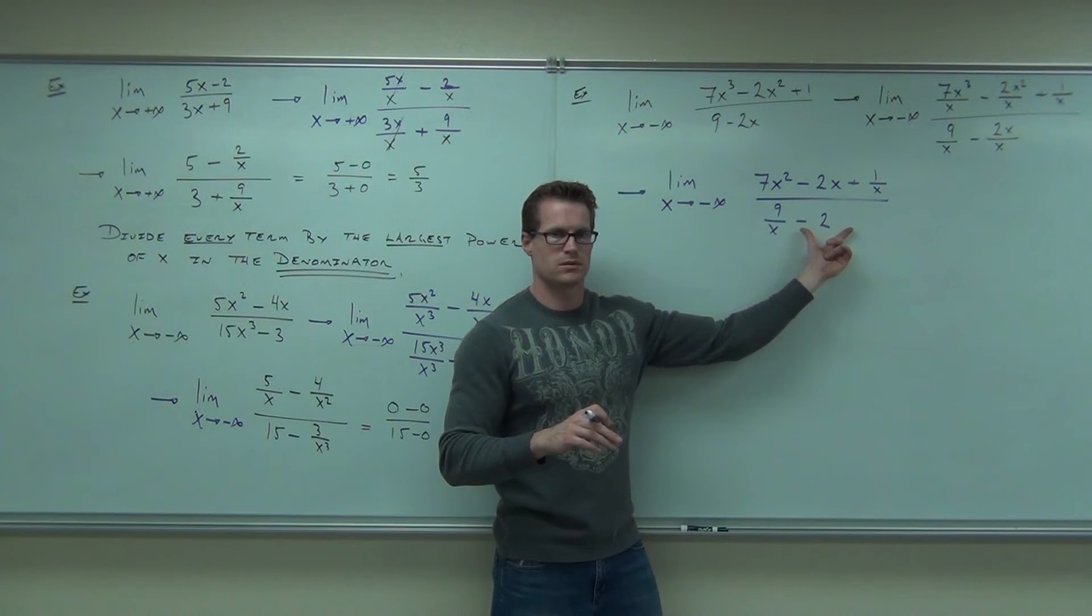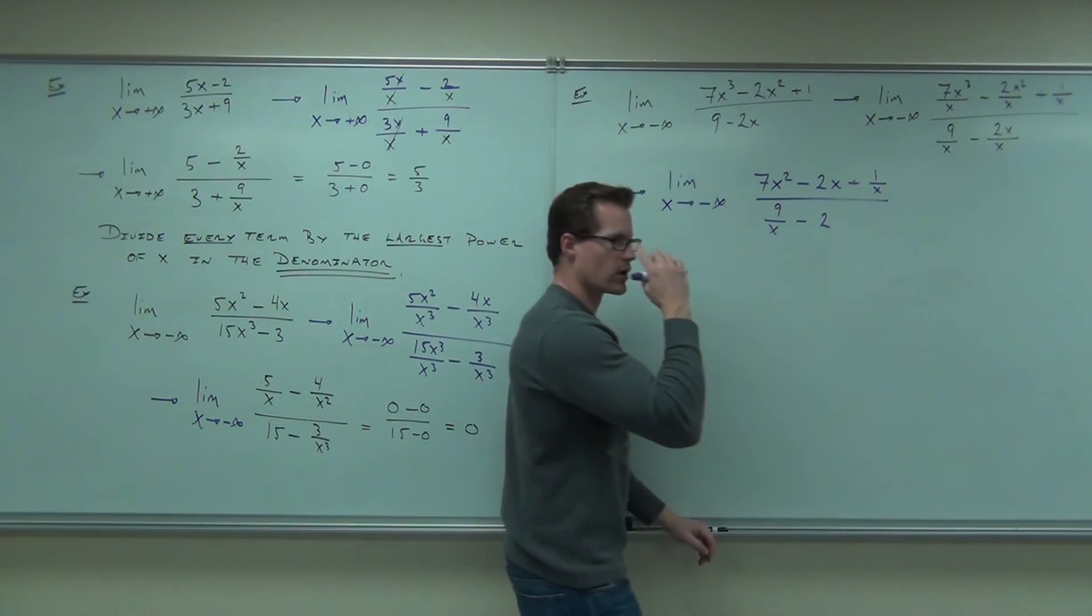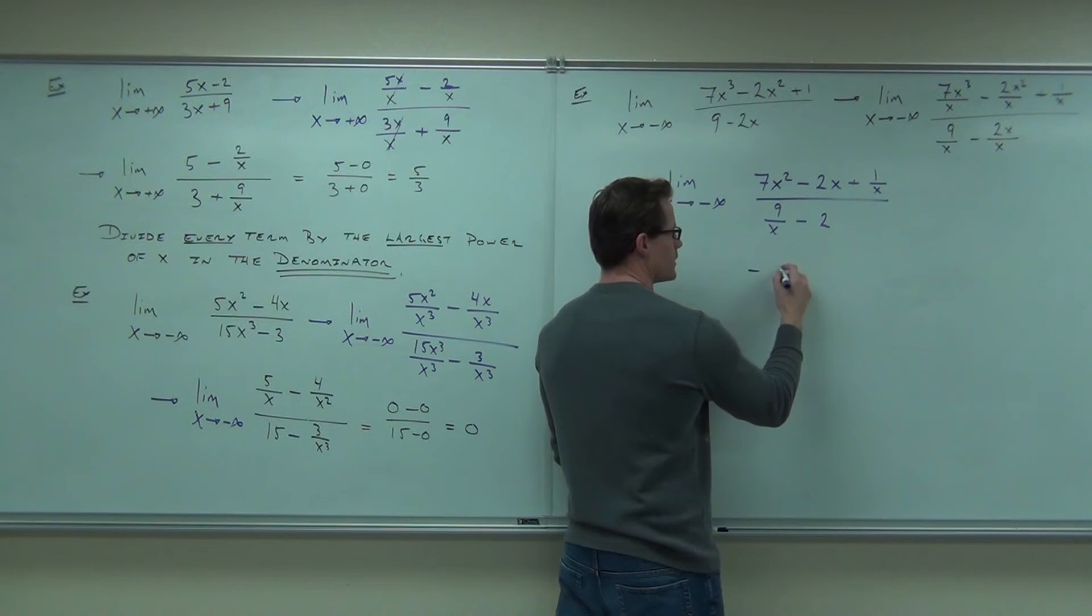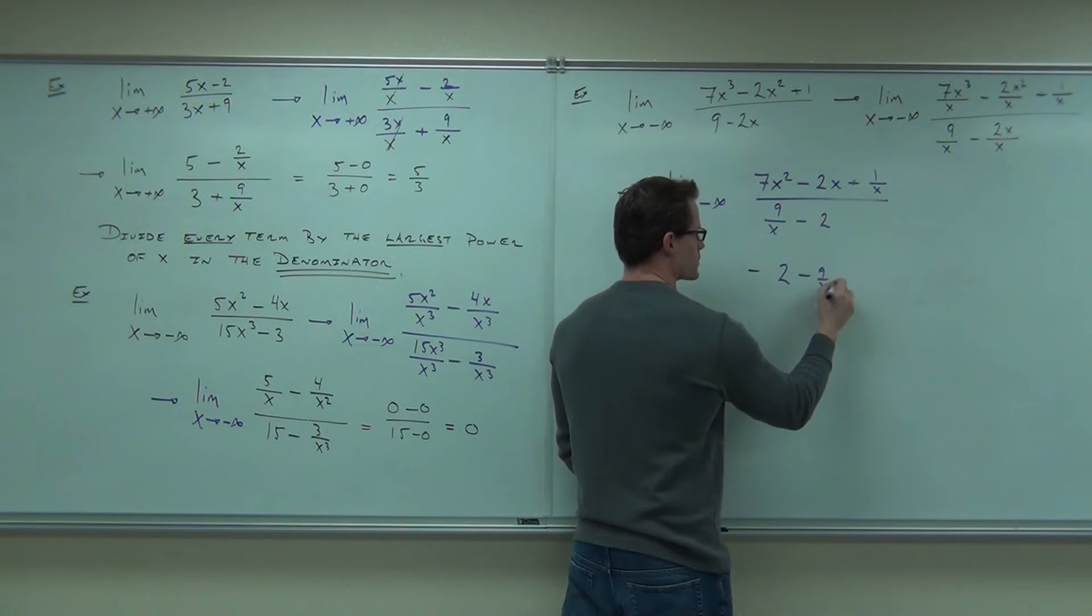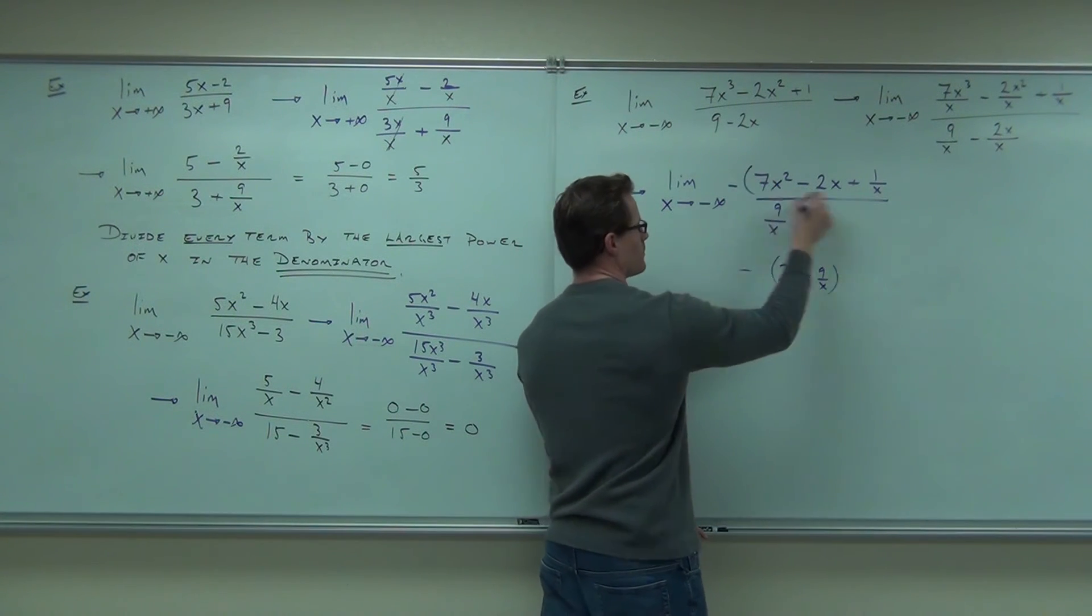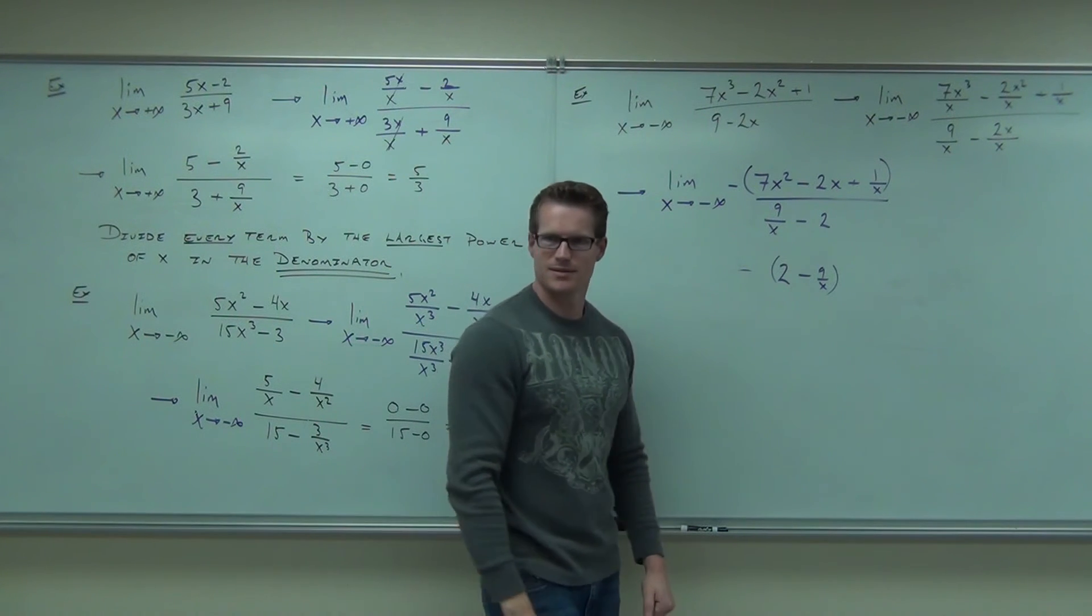Where's that going? Negative infinity. In fact, if you really wanted me to show it to you this way, I could. Couldn't you factor out a negative and get 2 minus 9 over x? Move the negative off top. Negative infinity. Bam. Got it. Do you see it?